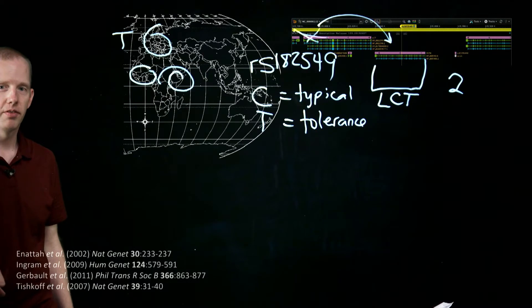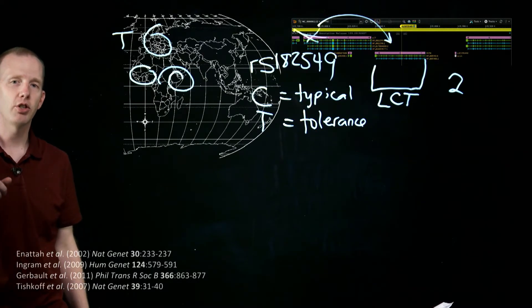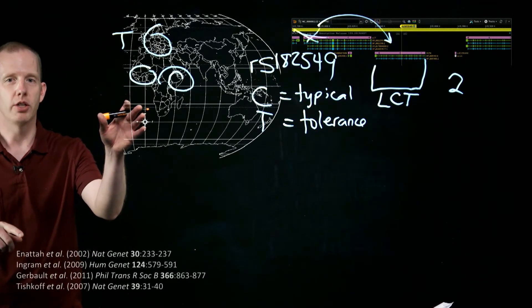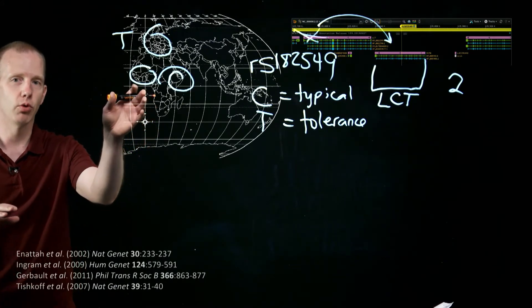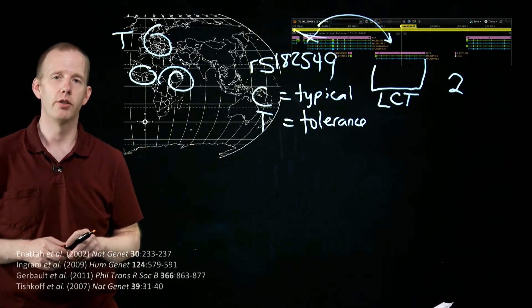Tishkoff et al., this is the last reference down here, did actually show that in one African population, there actually was a totally different mutation in that group that does cause lactase persistence in adulthood,